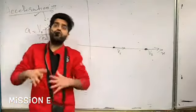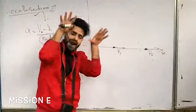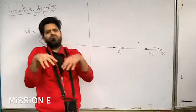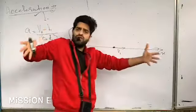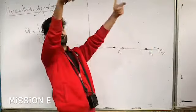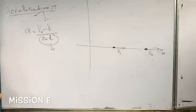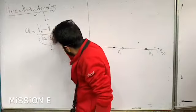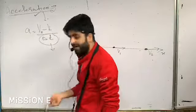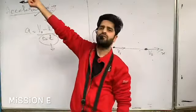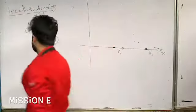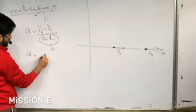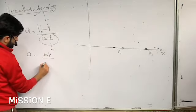If a particle undergoes a huge change in velocity in a short time interval, the acceleration will be very large. If a particle undergoes a change in velocity over a large interval of time, the acceleration will be less. So acceleration is delta v divided by delta t.